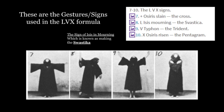These are the gestures and signs used in the LVX formula, which is for the hexagram rituals. Number seven is Osiris Slain — the cross. Number eight is Isis in Mourning — the swastika. Number nine is Typhon and Apophis — making the trident. And the X — which Elon Musk loves so much — is Osiris Risen, or the pentagram.